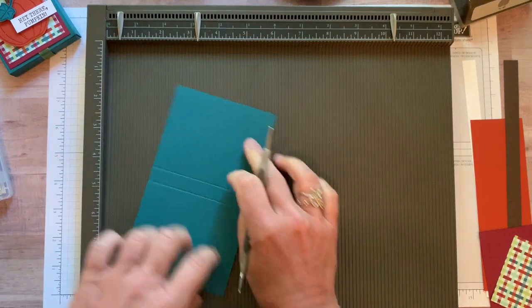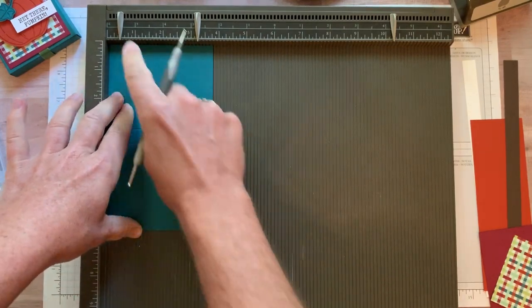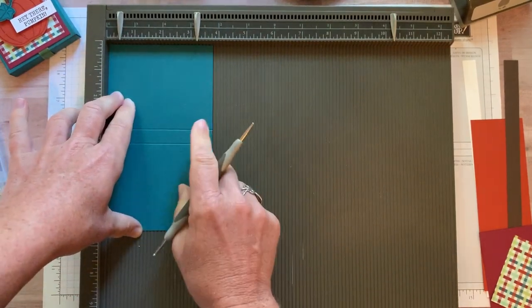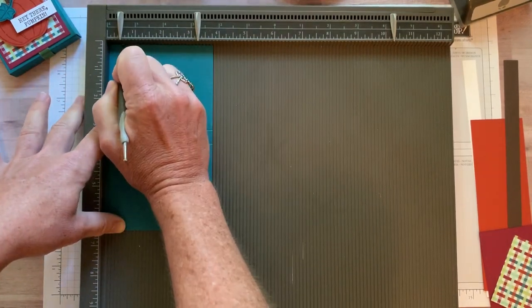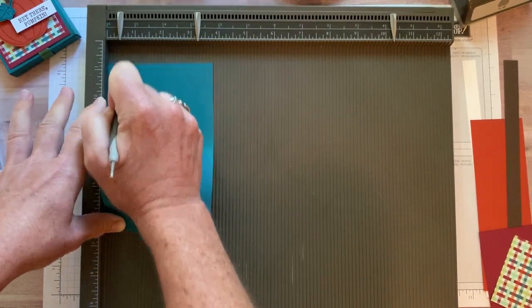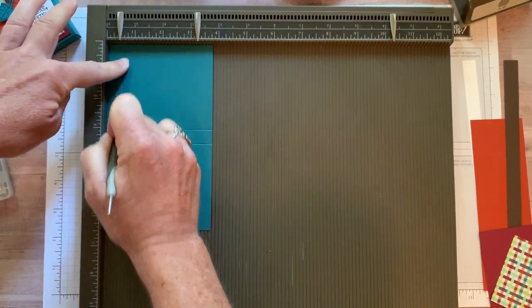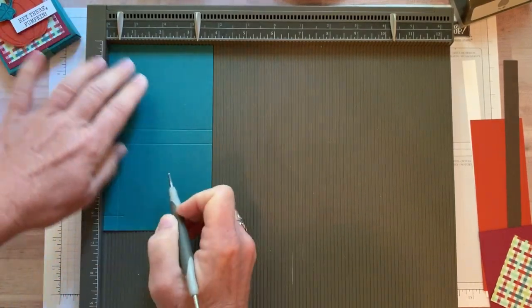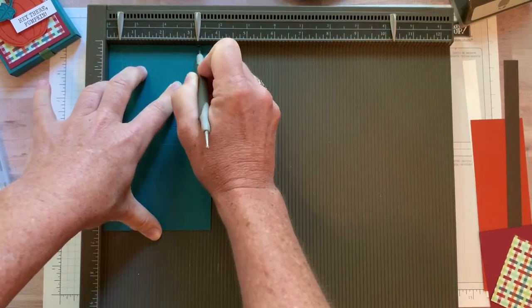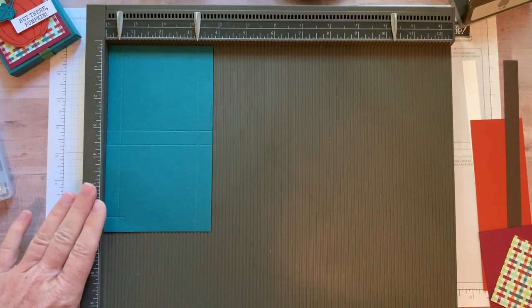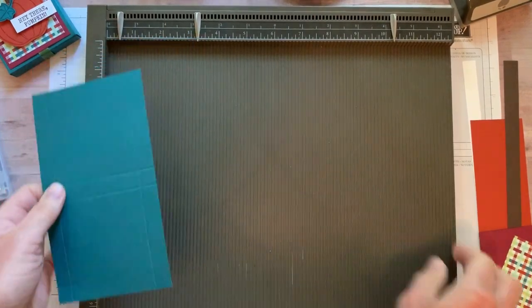On the long side, we are going to score at three inches and at three and a half inches. I'm going to do that one more time. Along the short side, we are going to score at one half and then at three and one quarter. I'm going to just do those. And that's all you do basically to make your little treat box.